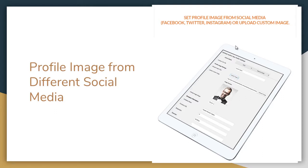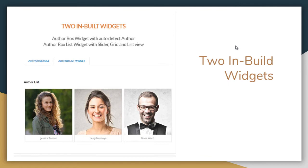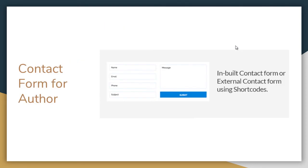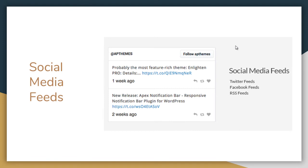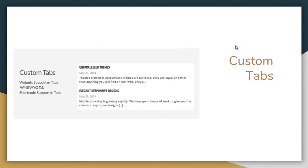You can set your profile image from different social media — Facebook, Instagram, or Twitter — or upload your own custom image. There are two inbuilt widgets: an author box widget with auto-detect author, and an author box list widget with slider, grid, and list view. There is also an inbuilt contact form or external contact form usable with shortcodes, a company description tab, social media feeds from Twitter, Facebook, or RSS, and custom tabs which support widgets, shortcodes, and a WYSIWYG tab.